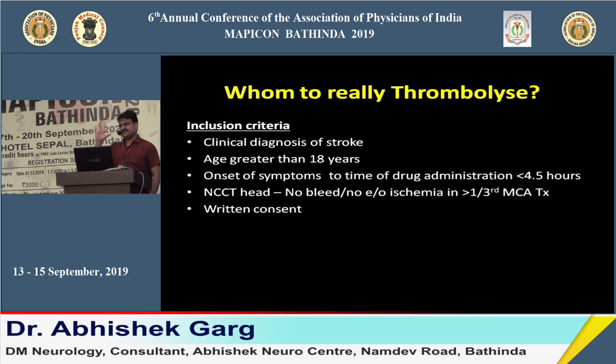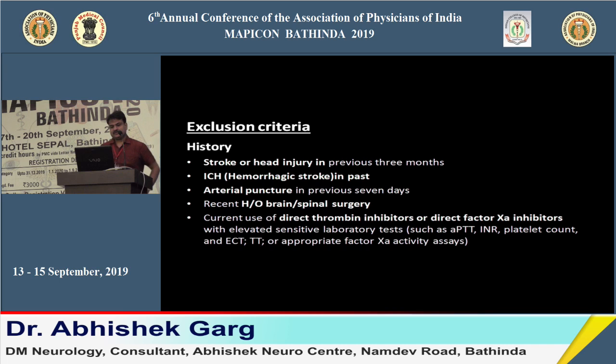Inclusion criteria for thrombolysis: clinical diagnosis of stroke, age greater than 18 years, window period less than 4.5 hours, CT showing no bleed, and written consent. Exclusion criteria include: history of stroke or head injury in the previous three months, history of hemorrhagic stroke, arterial puncture in the last seven days, recent brain or spinal surgery, or use of newer oral anticoagulants.